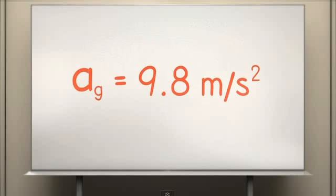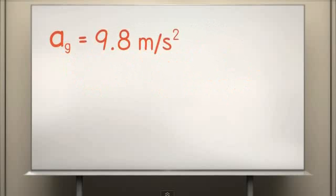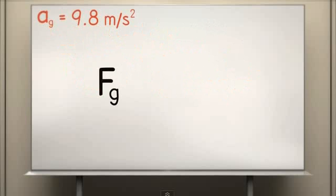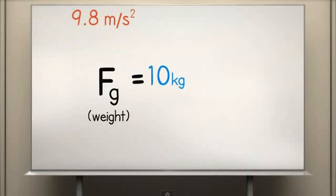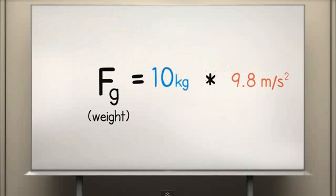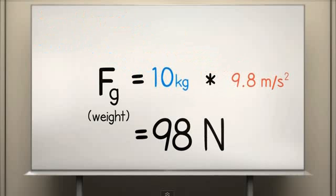In outer space, your weight would be zero newtons. But since acceleration is constant at 9.8 meters per second squared on Earth's surface, we can use the force of gravity is equal to the mass times the acceleration of gravity to quickly find the weight of an object from its mass, or vice versa. For example, the weight of a 10 kilogram mass on Earth's surface is 10 kilograms multiplied by 9.8 meters per second squared, or 98 newtons.